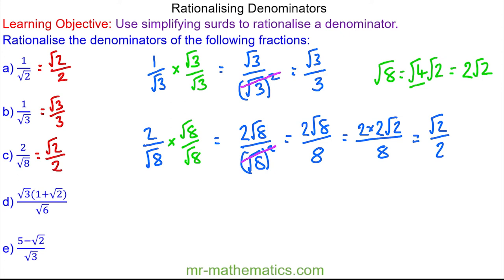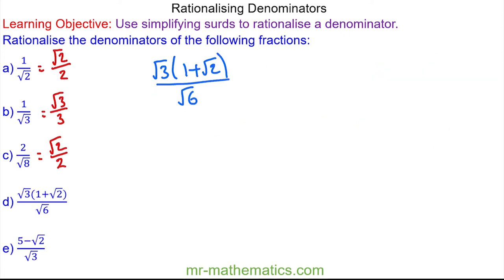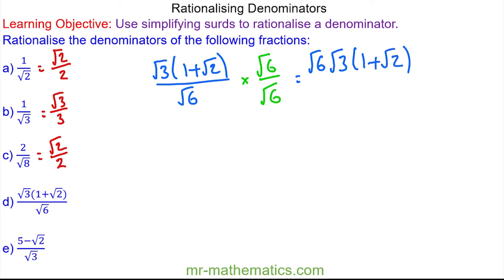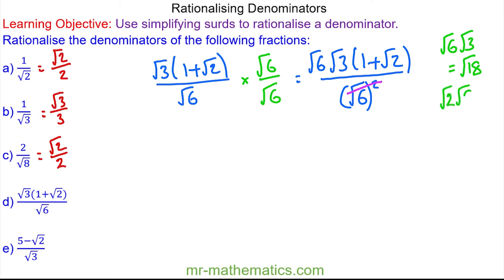Let's move on to question d. We'll begin by multiplying the numerator and denominator by root 6. This becomes root 6 multiplied by root 3 lots of 1 plus root 2, over root 6 squared — and these will cancel. The square root of 6 multiplied by the square root of 3 becomes the square root of 18. We can simplify root 18 as root 2 times root 9, which is 3 root 2, because the square root of 9 is 3.